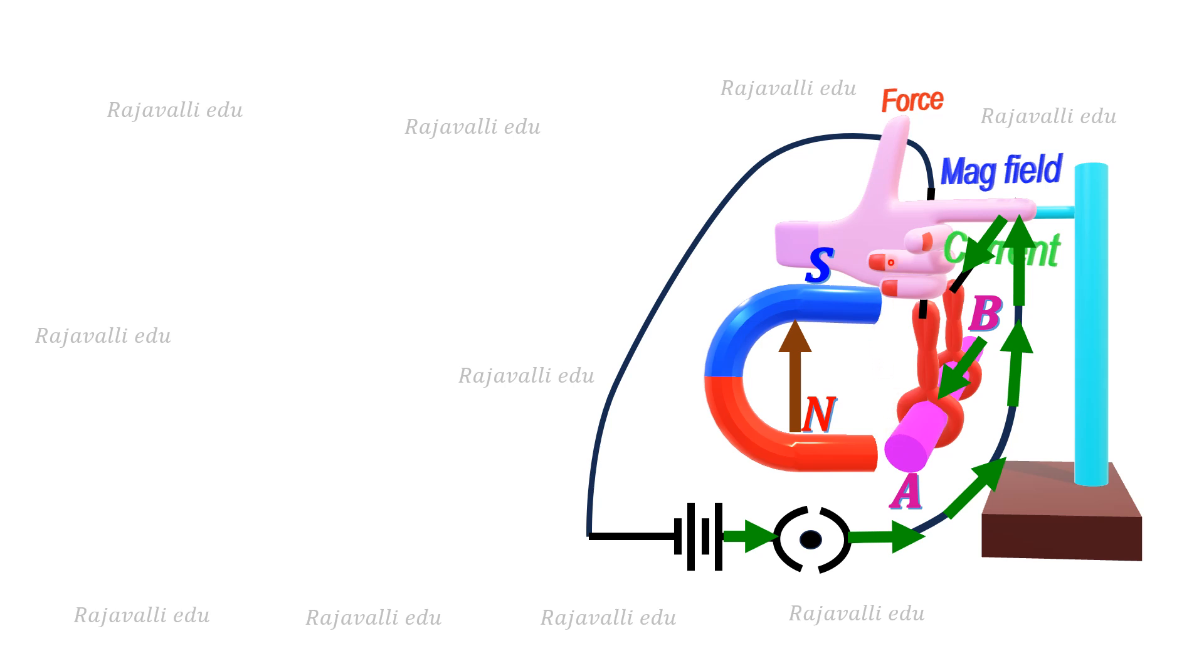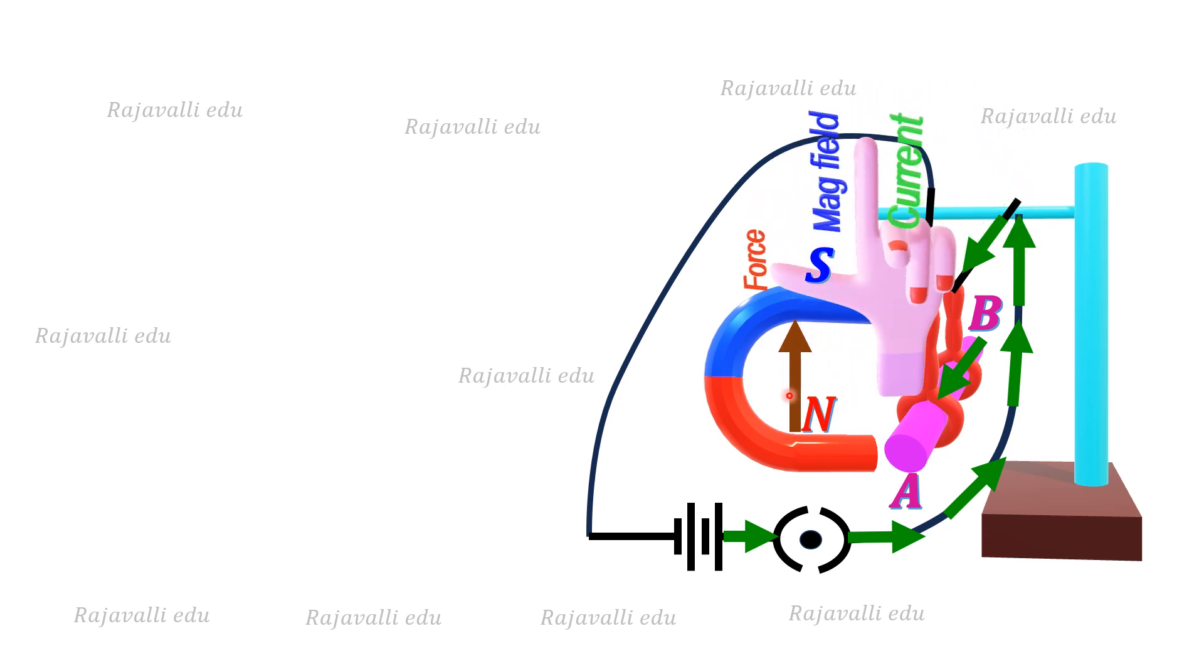So here we change this direction of the forefinger pointing upward direction, that is given in this question. And the current direction is moving towards us, so that thumb shows a force on the conductor, that is, it points left side or west direction.